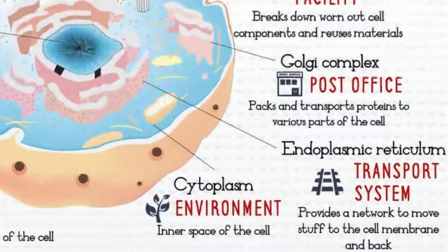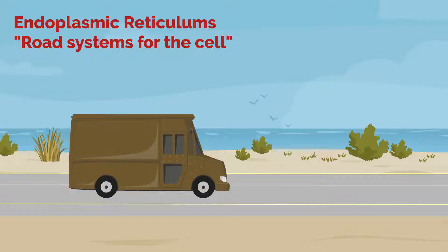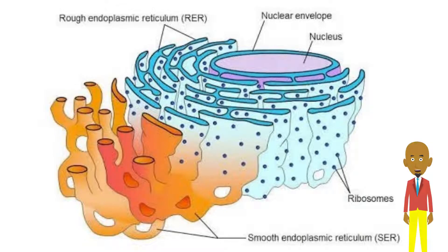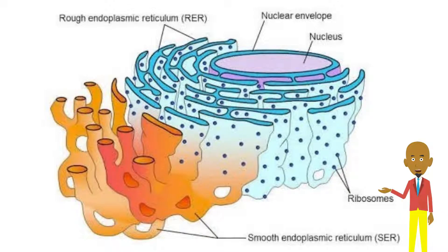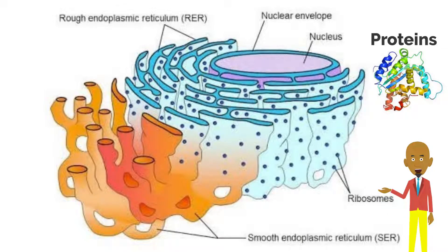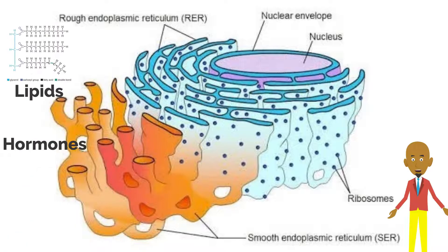Second, we have the endoplasmic reticulums, which are the roads or highways for Cell City, because they help materials move throughout the city. There are two types: the rough endoplasmic reticulum and the smooth endoplasmic reticulum. The rough endoplasmic reticulum helps with the making of proteins and is called rough because there are ribosomes attached to it that help with the production and transportation of proteins throughout the cell. The smooth endoplasmic reticulum makes hormones and lipids for the cell.